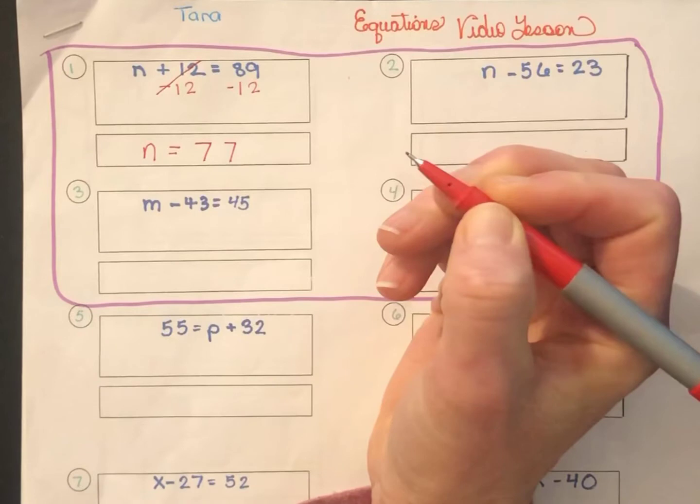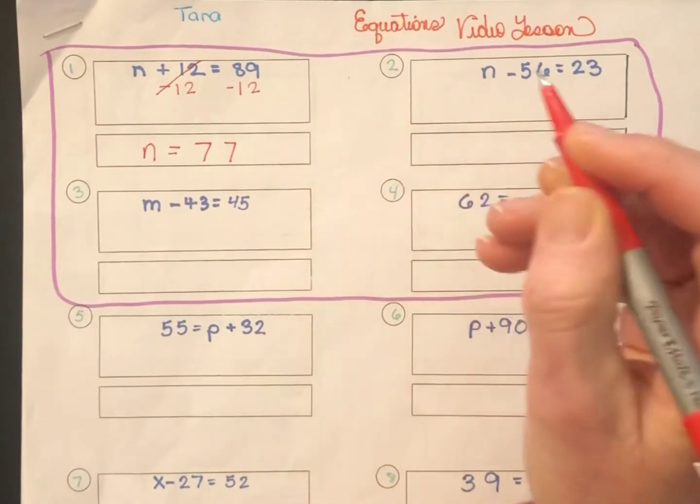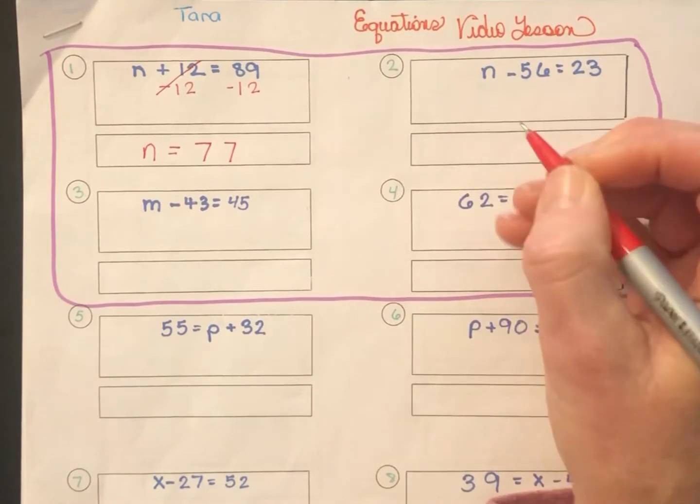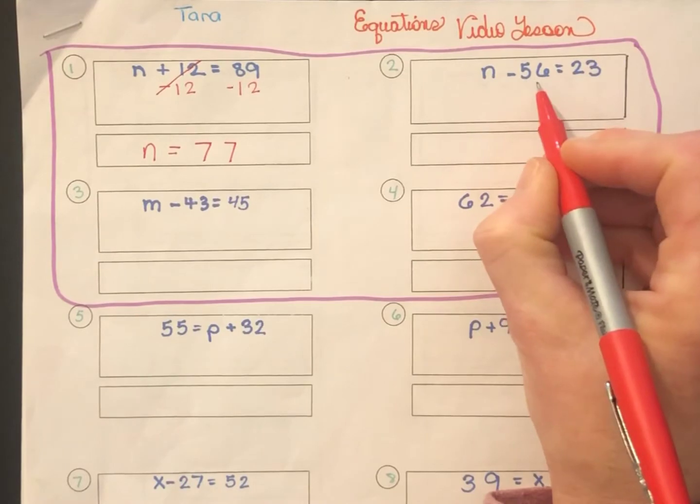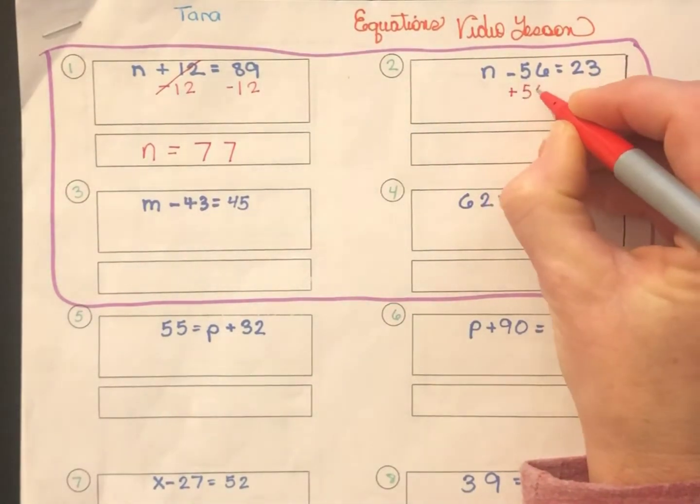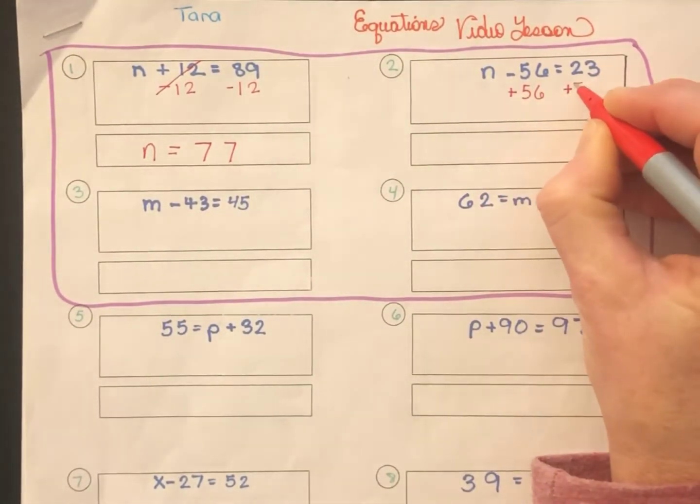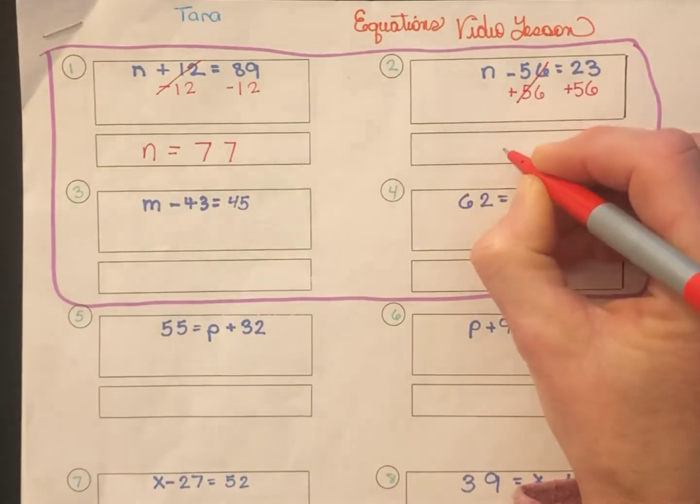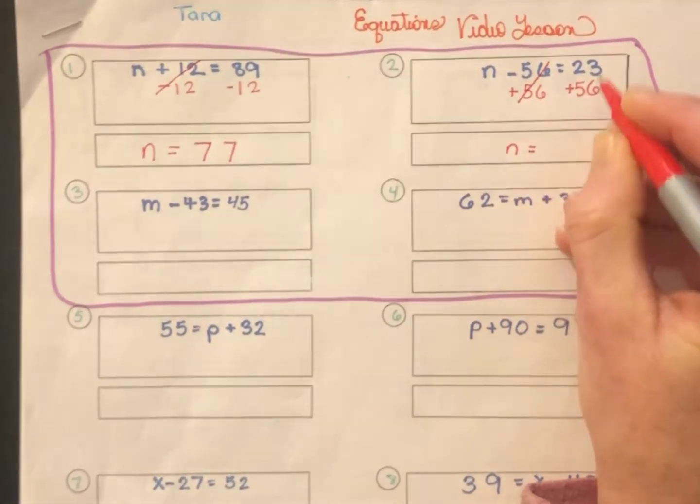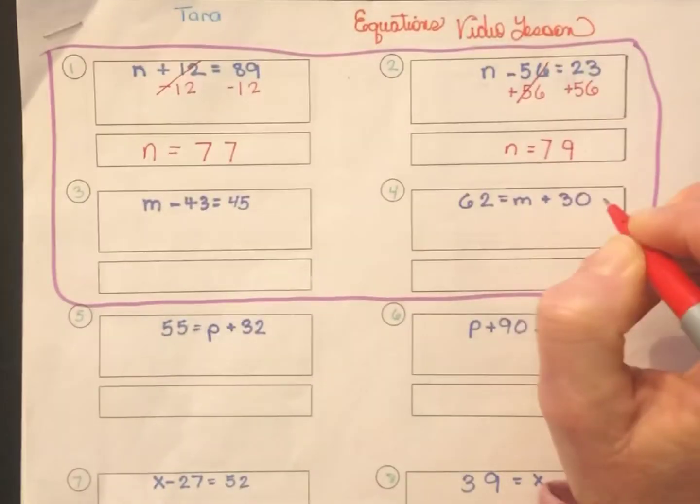If I go back and check to see if I got it right, I can substitute n with 77. And I check to see 77 plus 12. Since 77 plus 12 is 89, I know that my solution is correct. On to number two, n minus 56 equals 23. Well this time, I have a negative number. So the opposite of negative 56 is positive 56. So I'll add 56 to both sides. Negative 56 plus 56 cancels out. Leaves me with n equals 23 plus 56 is 79.